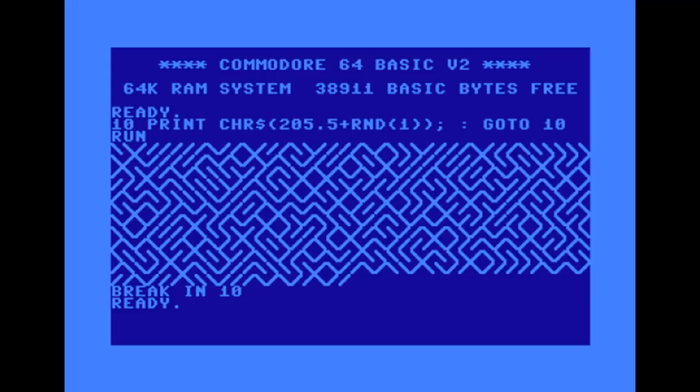The next program is called ten print. It is a crude approximation of a very famous one-liner written in BASIC for the Commodore 64. It prints a maze on the screen using random diagonal lines. In this case we will use our random generator IO device number five.